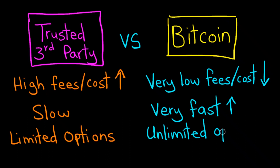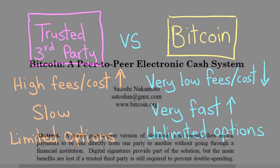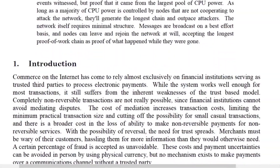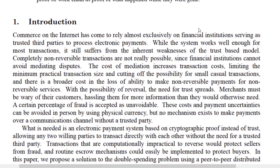In other words, we have greater control and options in Bitcoin's system. This point can be found in the introduction of Bitcoin's white paper where it says: 'The cost of mediation increases transaction costs, limiting the minimum practical transaction size and cutting off the possibility for small, casual transactions.'